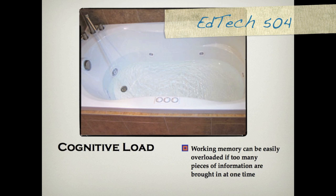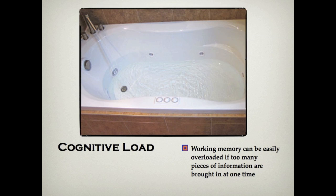Working memory can be easily overloaded if too many pieces of information are brought in at one time. Much like a whirlpool bathtub, as long as the information is below the jet level, it can swirl with ease to cover the area of the tub. However, if the information flow reaches a higher level, it becomes frantic and separating the calm from the waves is impossible.